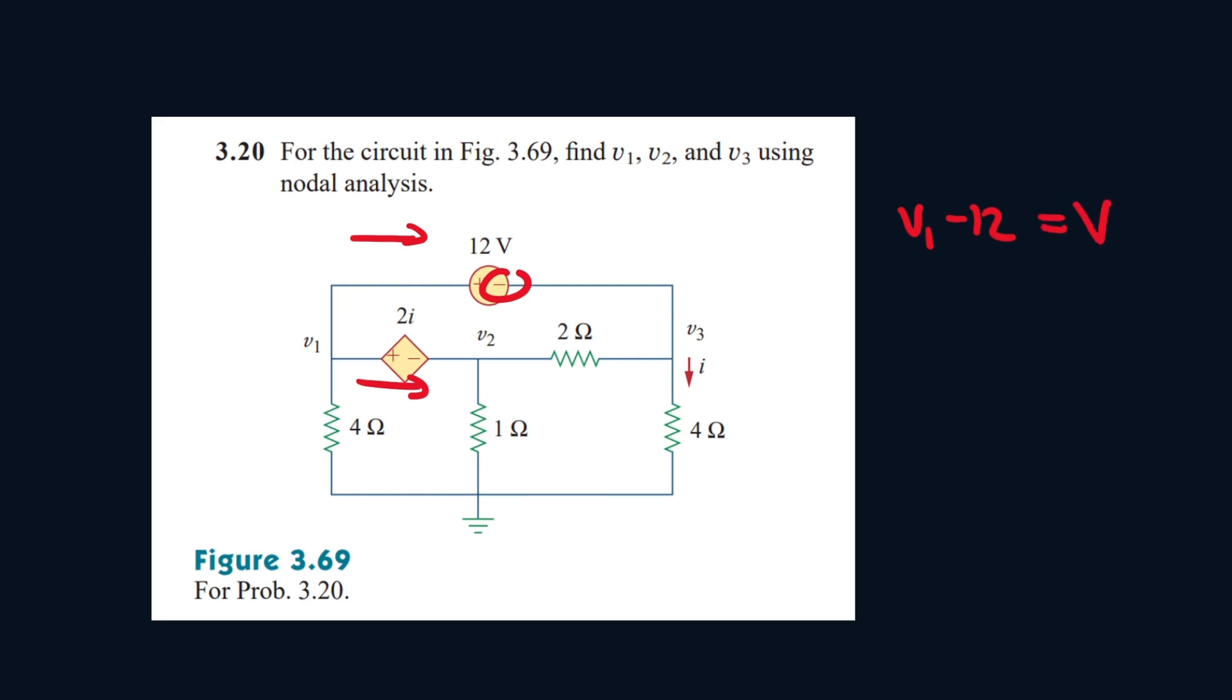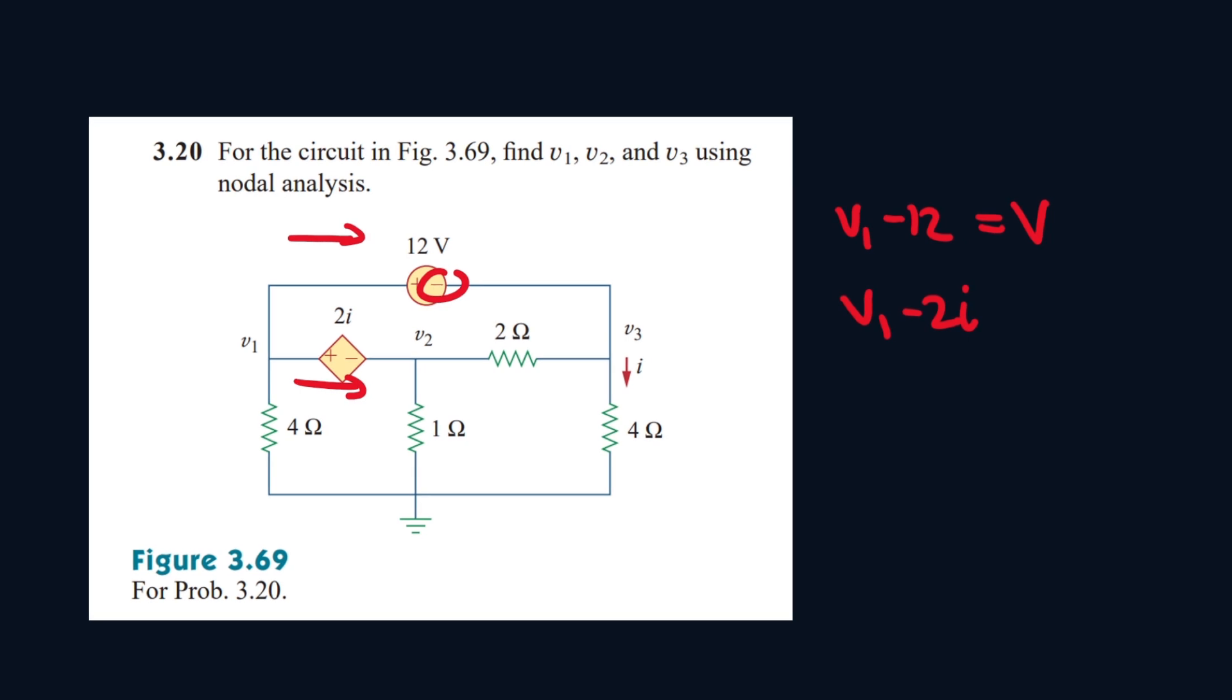And for the second one it'll be v1 minus 2i. 2i is the voltage value for that source, and this will be equal to v2.